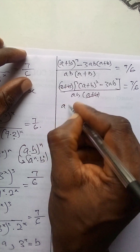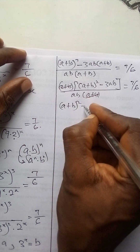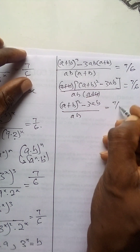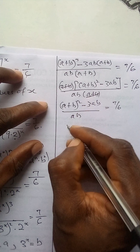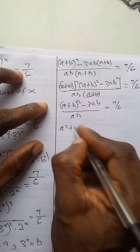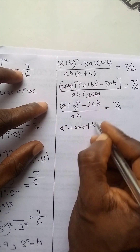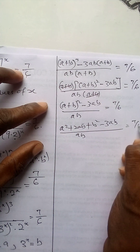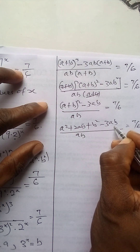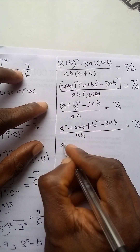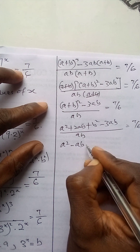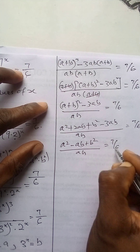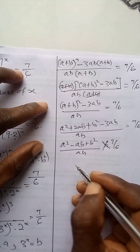The a plus b terms cancel, leaving: a plus b squared minus 3ab, all over ab, equals 7 over 6. Expanding the bracket: a squared plus 2ab plus b squared minus 3ab over ab equals 7 over 6. Combining like terms: 2ab minus 3ab gives minus ab, so we have a squared minus ab plus b squared over ab equals 7 over 6.